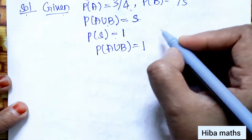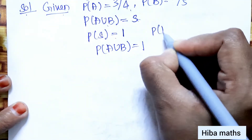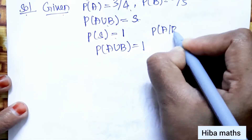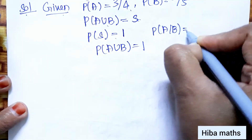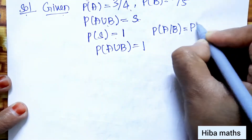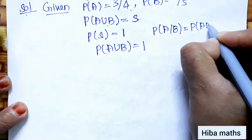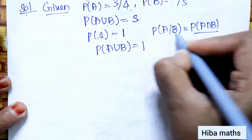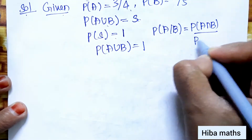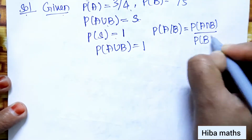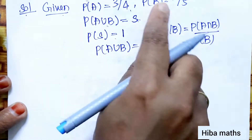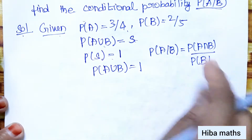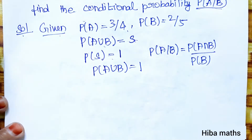We need to find P(A|B). The formula is: P(A|B) = P(A∩B) divided by P(B). So we need to find P(A∩B).